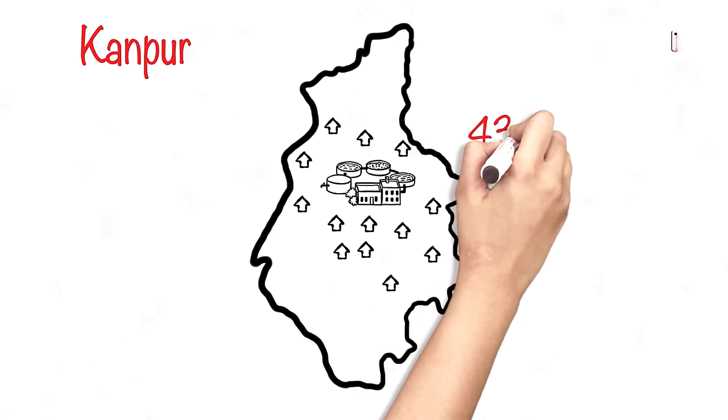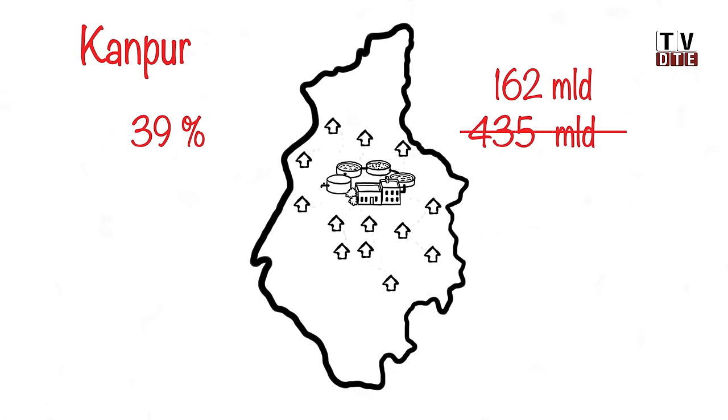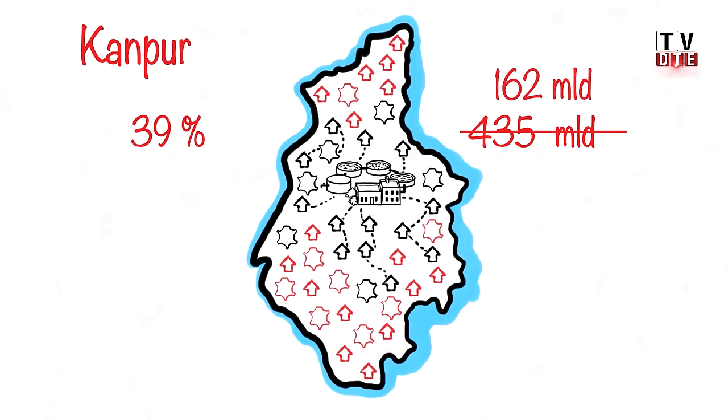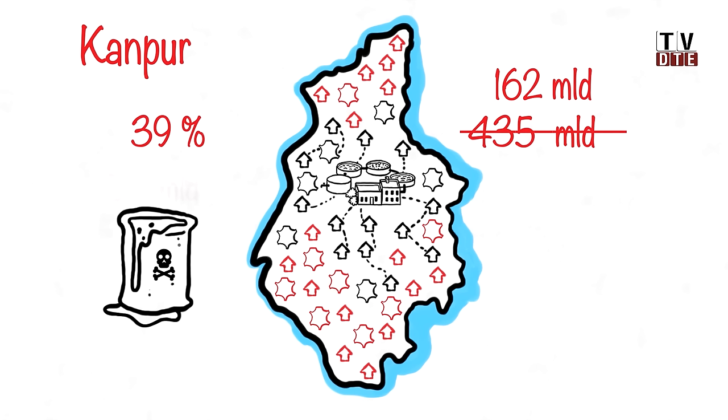Kanpur generates about 435 million litres per day of sewage, but the current pollution abatement infrastructure running optimally can only treat about 162 million litres per day. And this is because just 39% of the city is connected to an organised sewer system. The remaining households in the city of close to 3 million people expel their sewage into big and small open drains which discharge into the Ganga. Kanpur has another problem of tanneries which discharge about 50 million litres per day of highly toxic chemical waste. Of this, only about 9 million litres are treated in common effluent treatment plants.